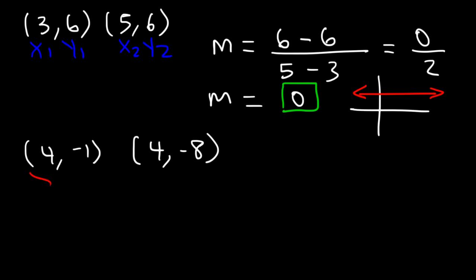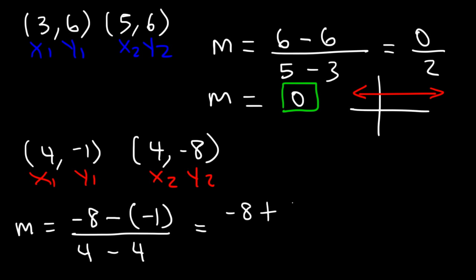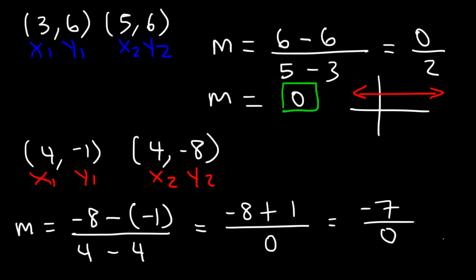Now what about the second example? Let's calculate the slope. So m is y2, which is negative 8, minus y1, which is negative 1, divided by x2 minus x1, which are both equal to 4. Negative 8 minus negative 1 is the same as negative 8 plus 1 — whenever you have two negative signs next to each other, you can change it into a positive sign. 4 minus 4 is 0. Negative 8 plus 1 is negative 7. Whenever you have a 0 in the denominator of a fraction, it's undefined. So the slope is undefined.